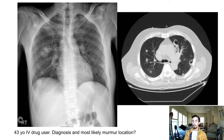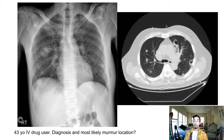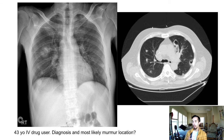43-year-old IV drug user — what's the diagnosis and where is the murmur? You see multiple emboli on CT and maybe one lesion on chest X-ray. Think septic pulmonary emboli in the setting of endocarditis. In non-drug users, endocarditis is most commonly on the mitral valve, then aortic. But in IV drug users, for Step 1 and Step 2 purposes, it's the tricuspid valve — so you'll most likely hear the murmur in the tricuspid location.